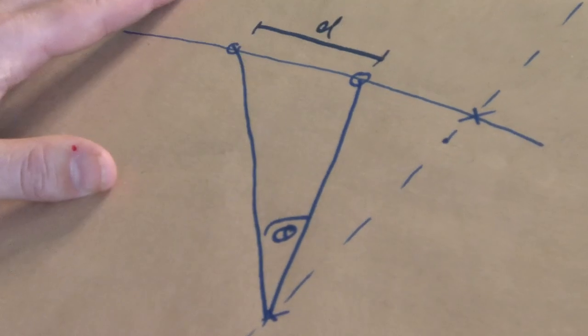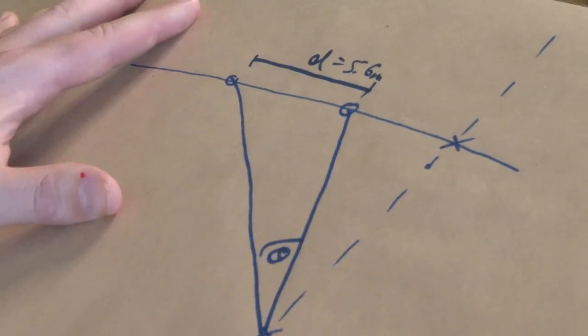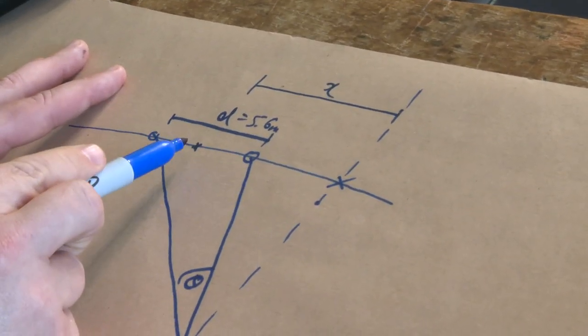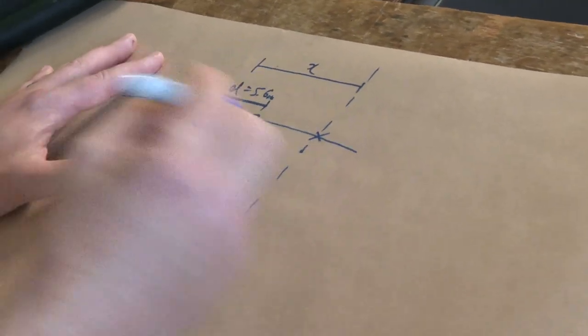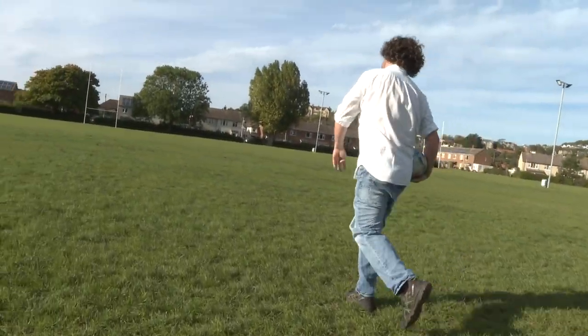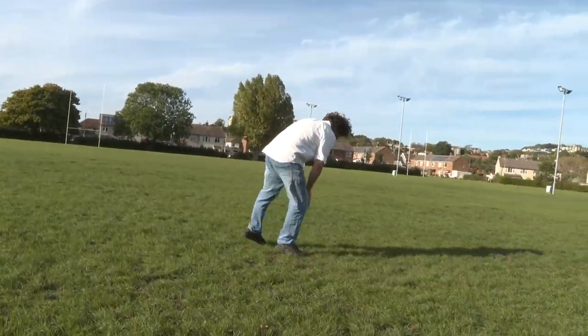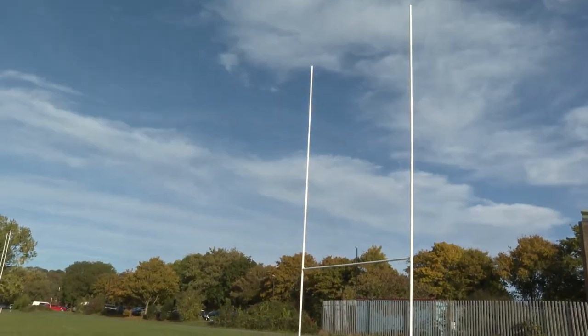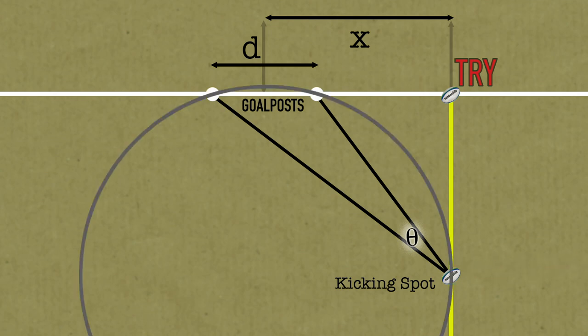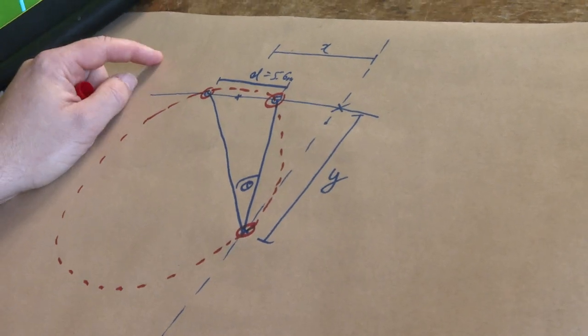The distance between the posts I'll call D — actually about 5.6 meters in rugby. The distance from the center of the posts to where you score the try I'll call X, and what we're trying to decide is Y — how far you should pace back to take the kick. Mathematically we're trying to find Y as a function of X. Now, any three points define a unique circle, and there are three points we care about: the left post, the right post, and your kick position.